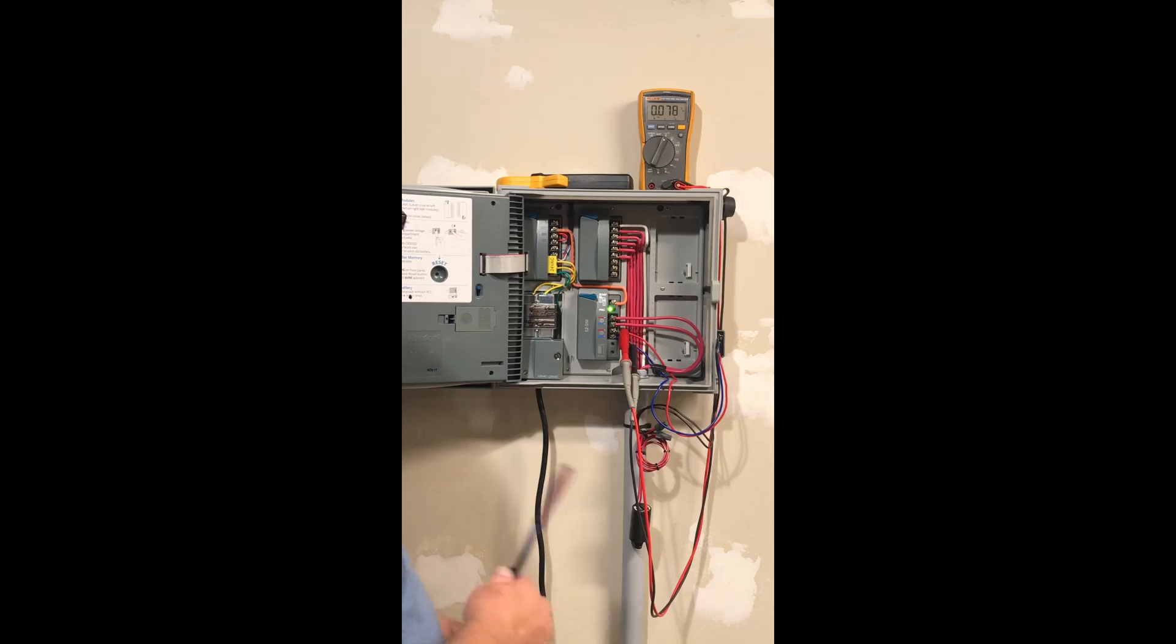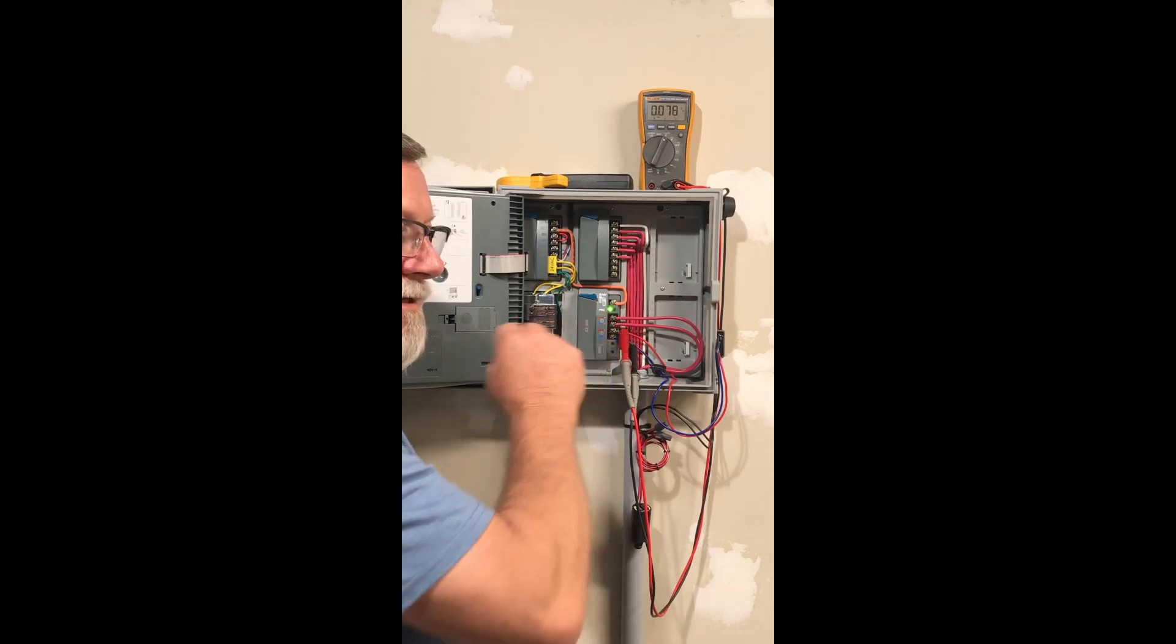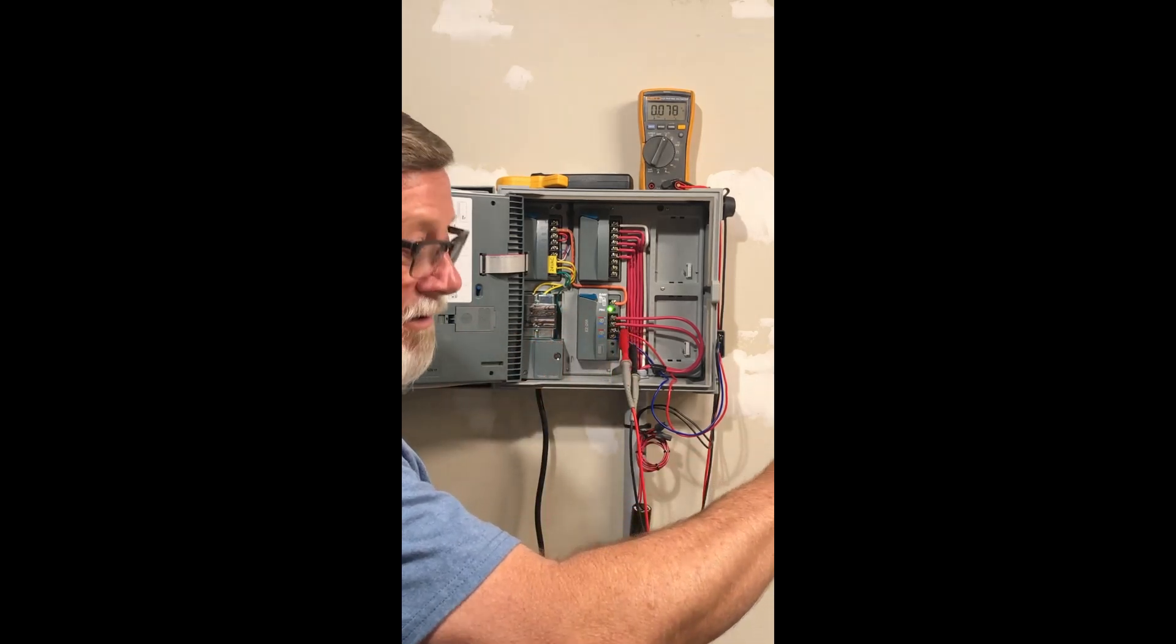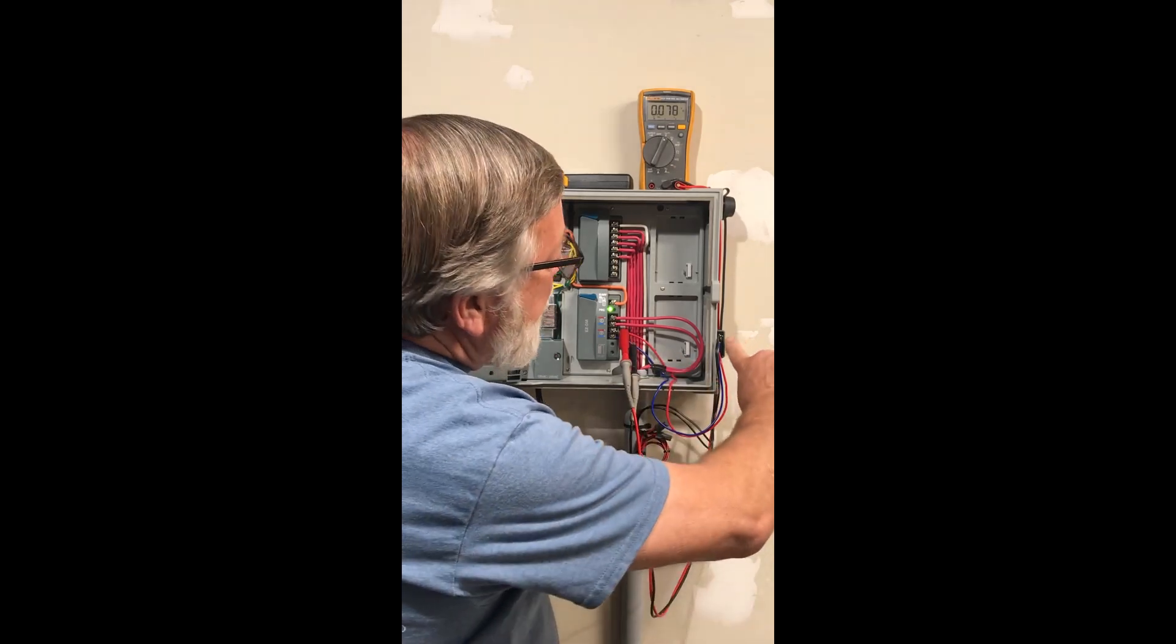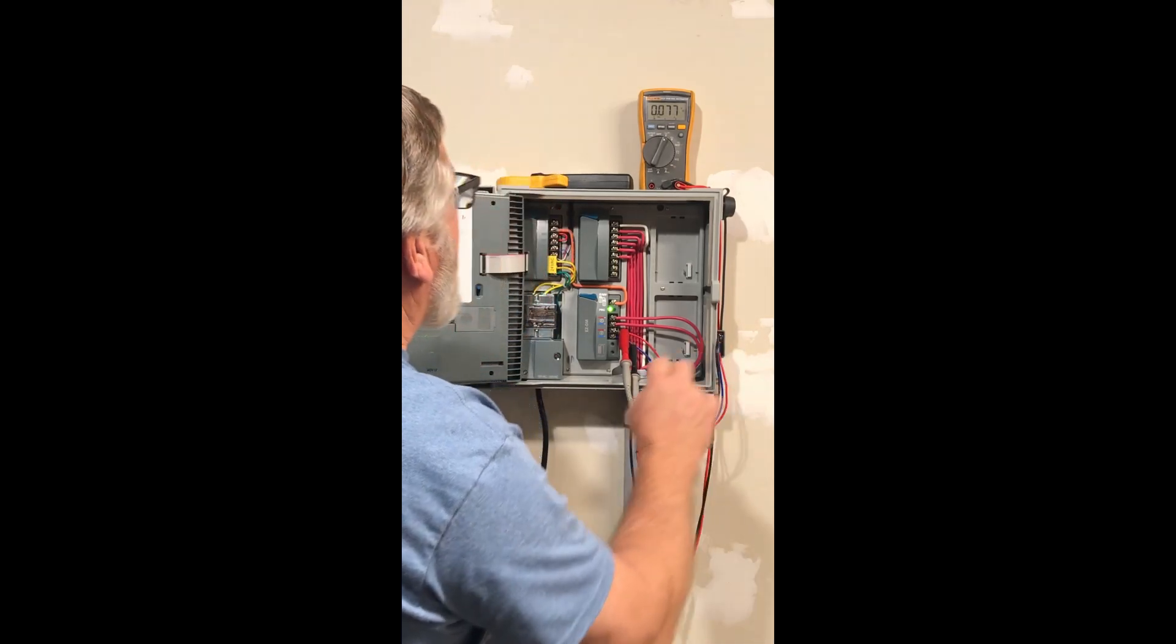When I go to turn on a station, you're going to notice this thing flicker really fast as it sends out the command to turn on this specific station. The solenoid is going to click and then right here on the decoder you should see a flashing green.